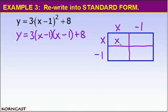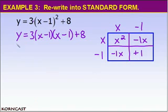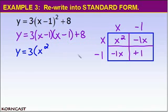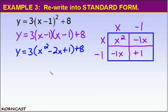X times x is x squared, x times negative 1 is negative 1x, negative 1 times x is negative 1x, and negative 1 times negative 1 is positive 1. So x minus 1 times x minus 1 equals x squared minus 2x plus 1. I now need to follow order of operations and multiply 3 to x squared minus 2x plus 1, and don't forget to add 8.